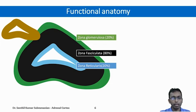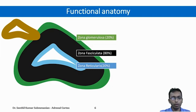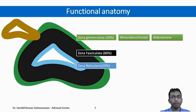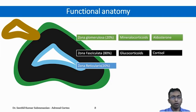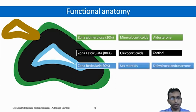The colors are given schematically for better understanding. Each layer in the adrenal cortex has a different function. The zona glomerulosa secretes mineralocorticoids, particularly aldosterone. The zona fasciculata secretes glucocorticoids, particularly cortisol. The zona reticularis secretes sex steroids, that is dehydroepiandrosterone.